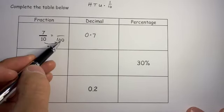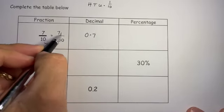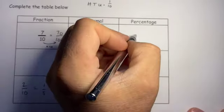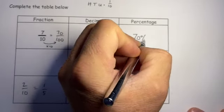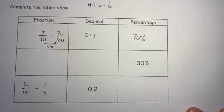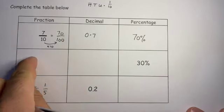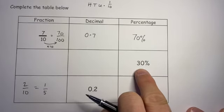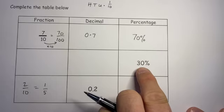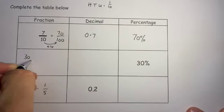But if I times that by 10, I've got times the top by 10, which gives me 70. So that first one is 70%. That means I can do this one back to a fraction because if that says 30 percent, then that means I've got 30 out of 100.